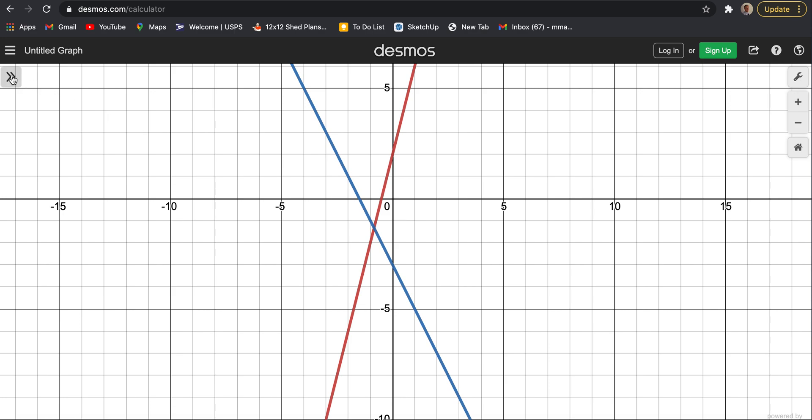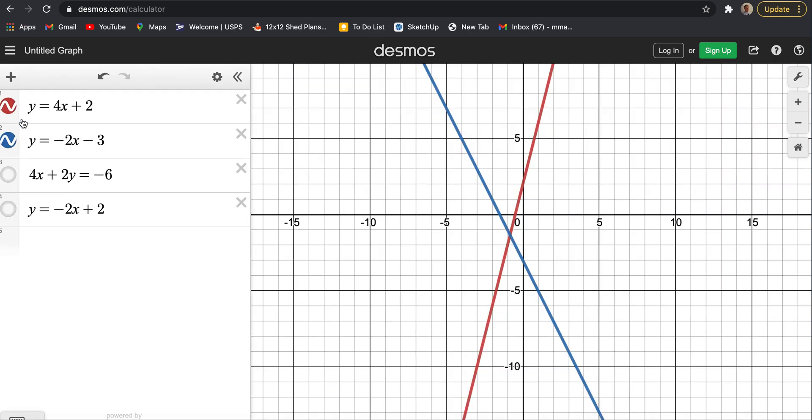And if I kind of peel back the curtain here, the red and the blue line have different slopes as the red is a slope of 4 and the blue is a slope of negative 2. And because they had different slopes, they intersected right there.